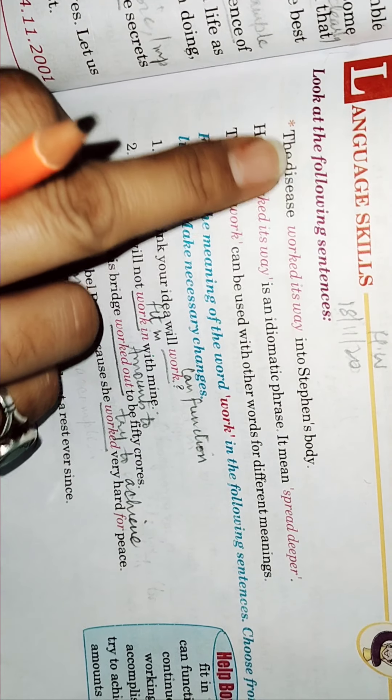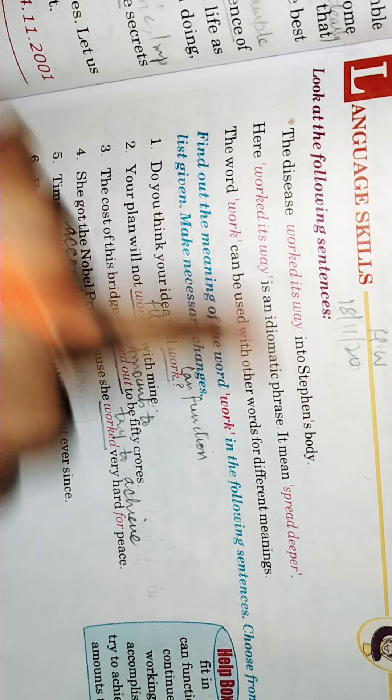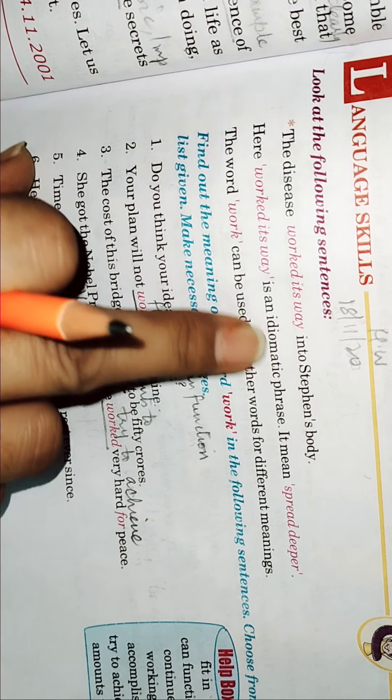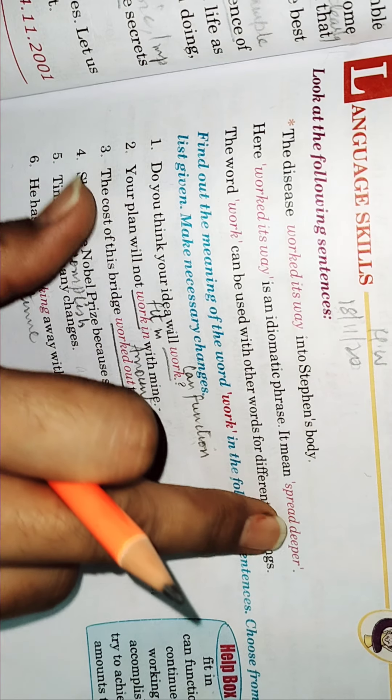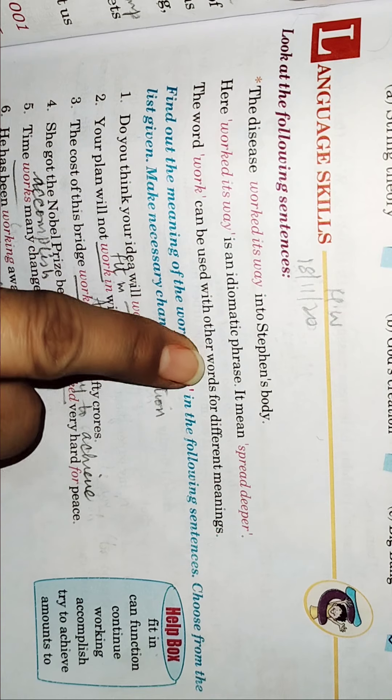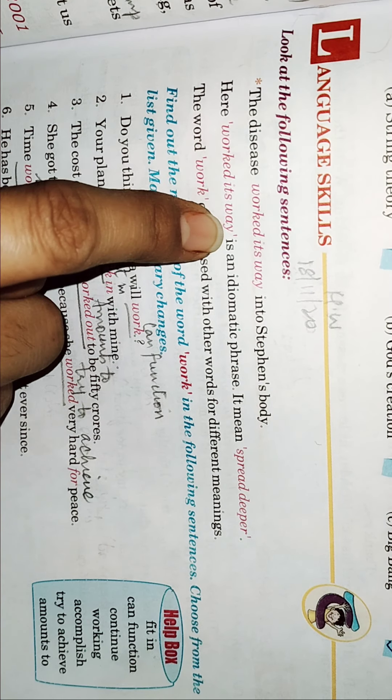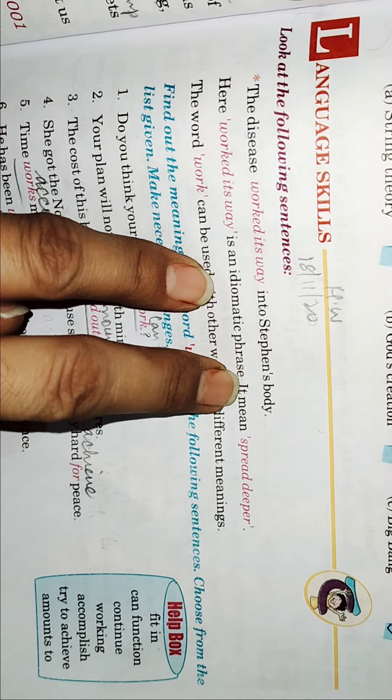This was language skills. Look at the following sentences. The disease worked its way in Stephen's body. Here worked its way means it's an idiomatic phrase and it means spread deeper. The word work can be used with other words for different meanings. So, here it is used as its way and it becomes an idiomatic phrase.